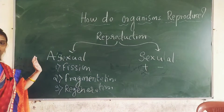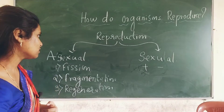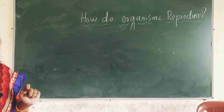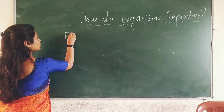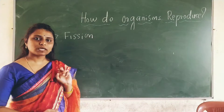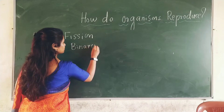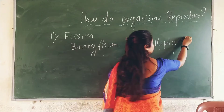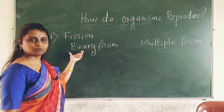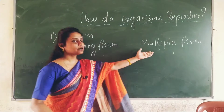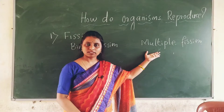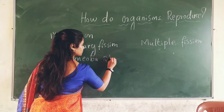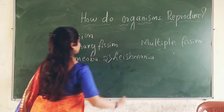Let us see the asexual mode of reproduction through fission. What happens in fission? One organism will split into two organisms. This usually occurs in amoeba. Fission is the first type of asexual reproduction we are studying. There are two types of fission: one is binary fission and another one is multiple fission.